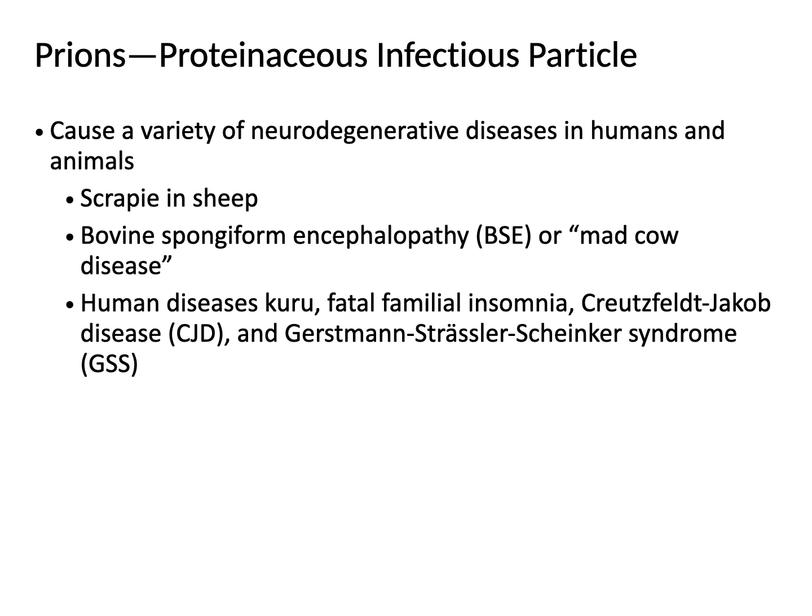Prion diseases can infect humans and animals with different presentations. Scrapie infects sheep — when infected, they end up scraping compulsively against wood posts and fences, eventually scraping through skin and muscle to bone. Normally the central nervous system would signal them to stop, but the infection removes that painful feedback. This was one of the first documented cases of prion disease.